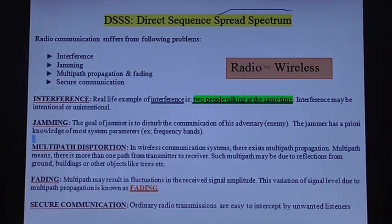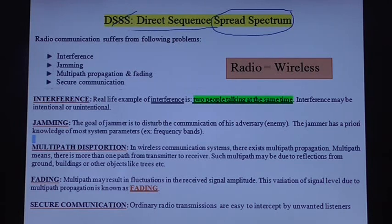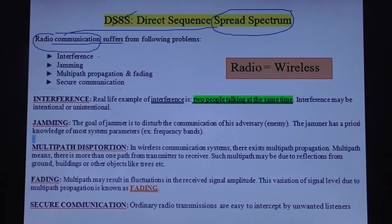Hello friends, today I will explain about one of the spread spectrum communication techniques called DSSS, Direct Sequence Spread Spectrum. Spread spectrum is basically used in radio communication systems. Radio communication systems suffer from problems like interference, jamming, multipath propagation and fading, and also lack of secure communication.